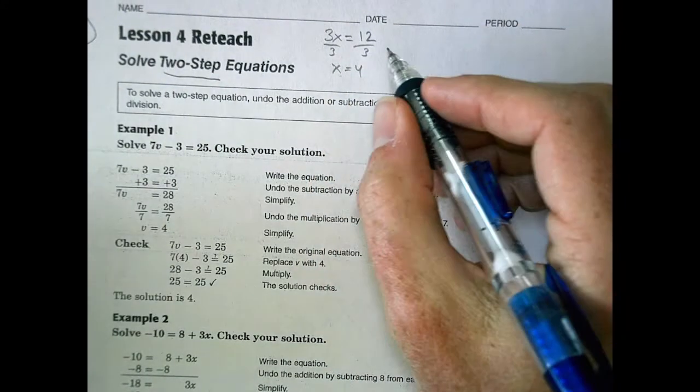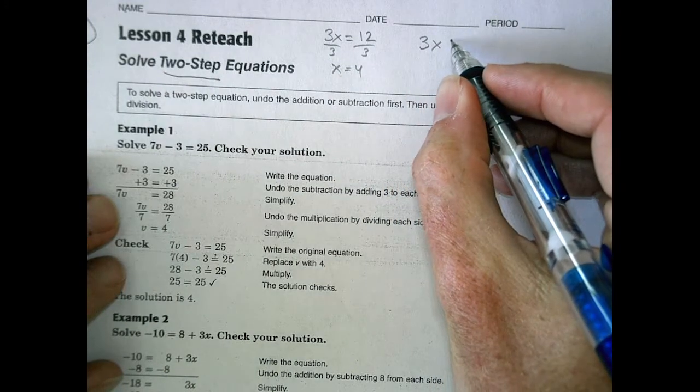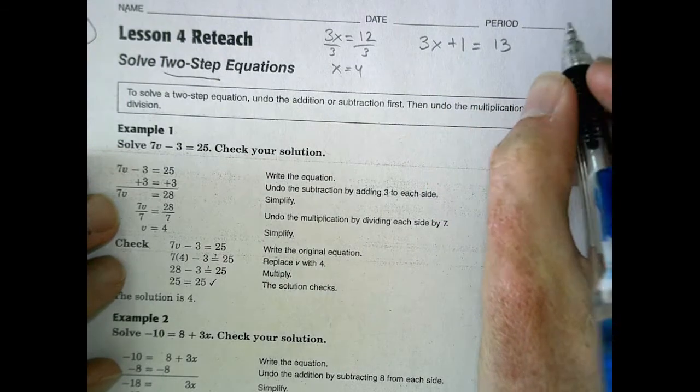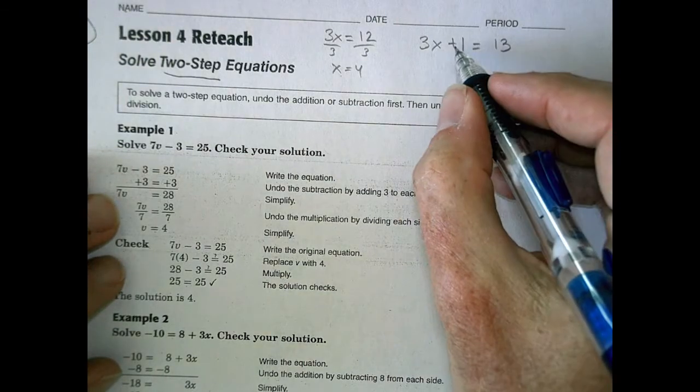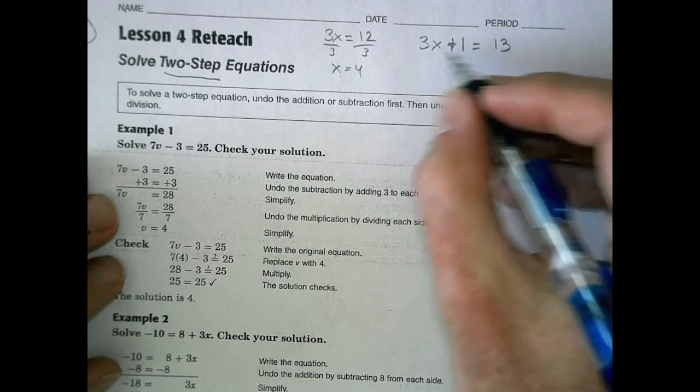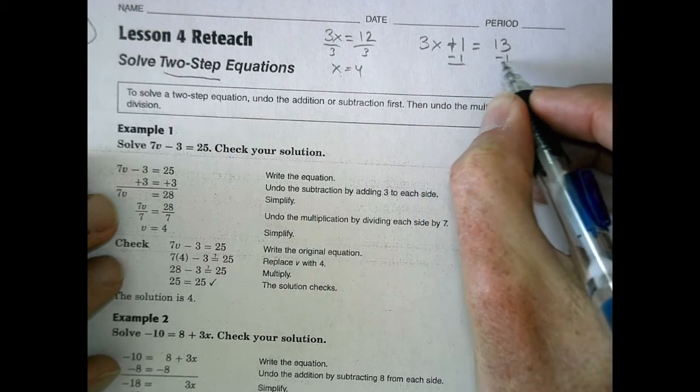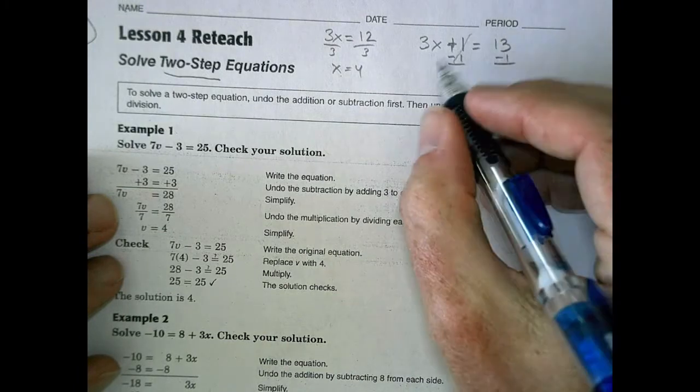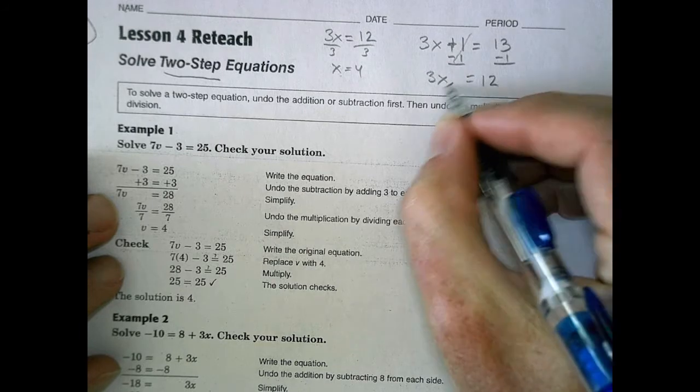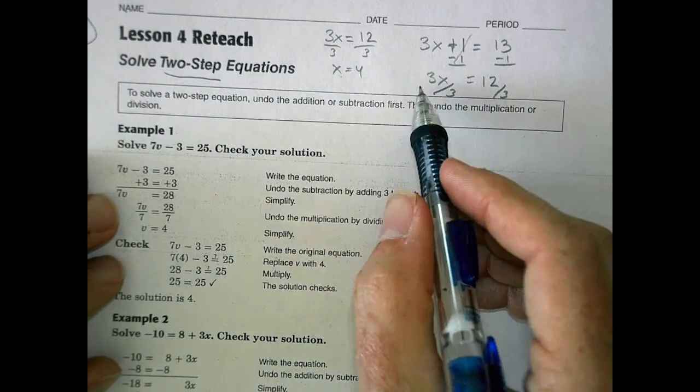What we're talking about today is a two-step process, where now we might have something more like 3x plus 1 equals 13. In this case, there's a couple steps we're going to have to do to isolate the variable. I'll subtract 1 from both sides to get that to go away, leaving me with 3x equals 12, and then divide both sides by 3 to get x equal to 4.